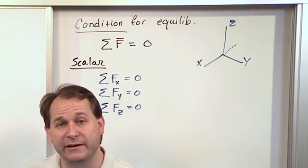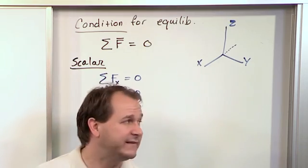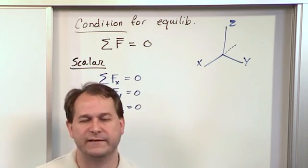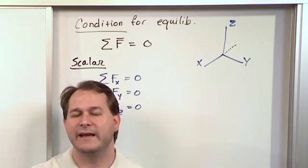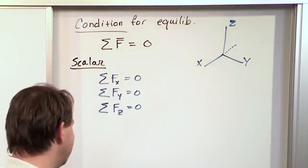As we draw our free body diagrams, we're typically drawing them in three dimensions. As you write things down using the scalar form of these equations, you need to keep track of whether your force is positive or negative depending on your sign convention. It's the same as we've done in two dimensions, we're just extending it a little bit.